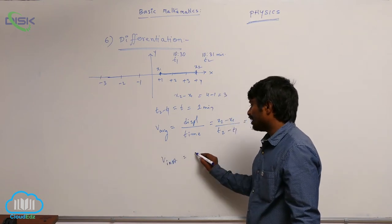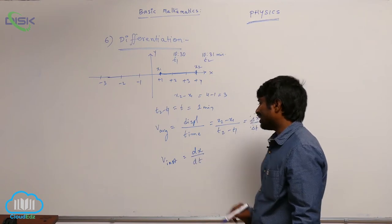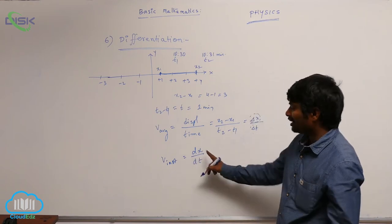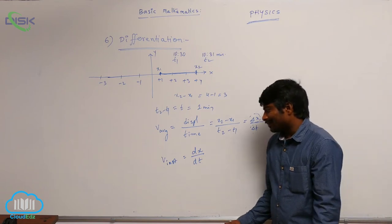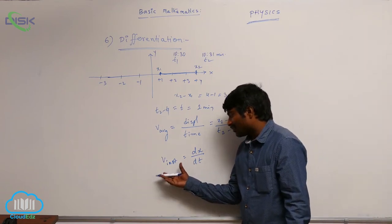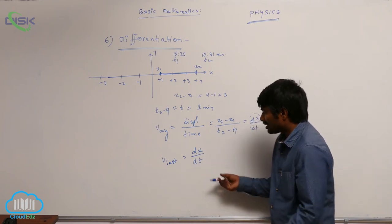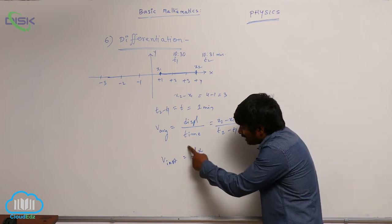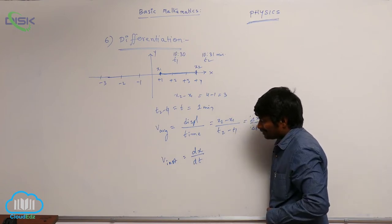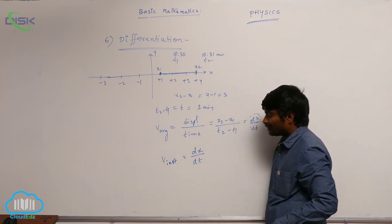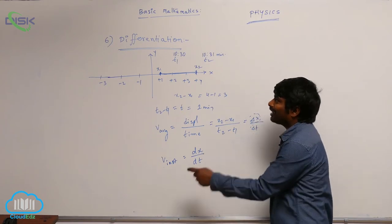In the same way, instantaneous velocity is the change of x with respect to time at a particular instant, written as dx/dt. This instantaneous velocity is defined with the help of differentiation — it is also called the rate of change of displacement at a particular instant, or the differentiation of x with respect to time.